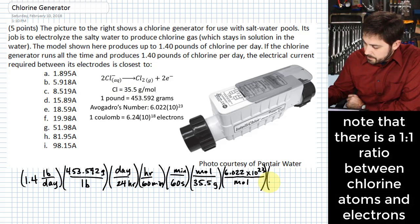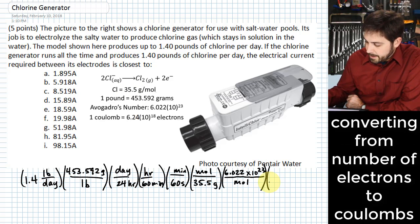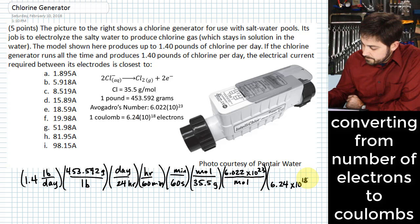And so what we can do then is multiply this by the number of electrons that you have in a Coulomb of charge. So that would be 6.24 times 10 to the 18th, and that would be electrons per Coulomb.